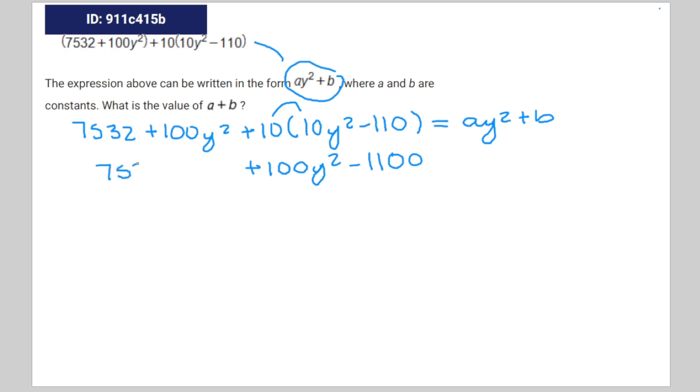Of course, 7,532 and 100y squared is equal to ay squared plus b.